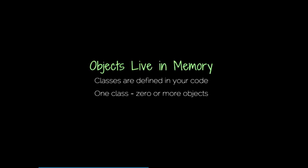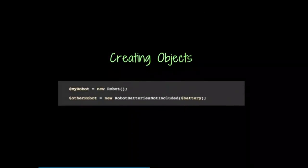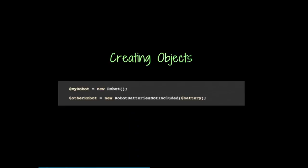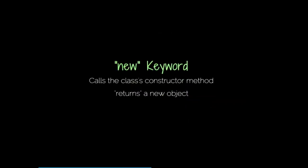Objects are said to live in memory, whereas classes are just defined in your code. One class can have zero or more objects in memory. To make objects, we use something called the 'new' keyword. We define a variable, 'new,' and then the class name. If the constructor has a parameter, we can include that as well when we build it. This is called instantiating a class. The 'new' keyword basically says: call the class's constructor and then return a new object. After you've created it, it lives by itself with its own set of variables, separate from any other object of the same class that already exists.